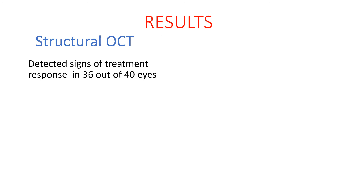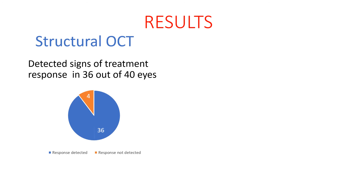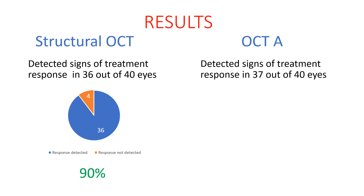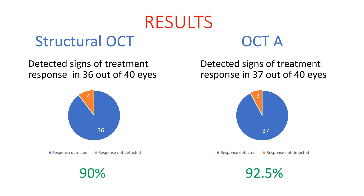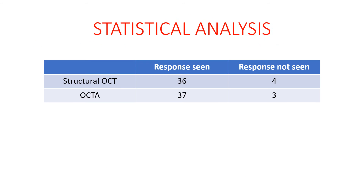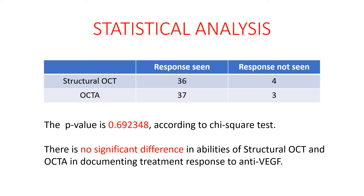We found that structural OCT detected signs of treatment response in 36 out of 40 eyes, that is 90% of cases, whereas OCT angiography detected signs of improvement in 37 out of 40 eyes, that is 92.5% of cases, which is almost equal. Statistical analysis showed that there is no significant difference in the ability of structural OCT and OCT angiography in documenting treatment response to anti-VEGF therapy.